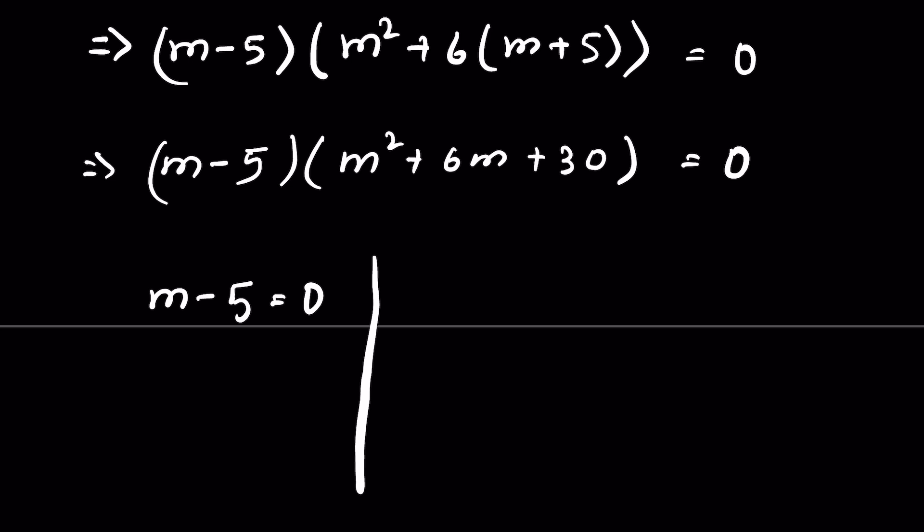When m - 5 = 0, then m = 5. This is one solution. For the second case, m² + 6m + 30 = 0, we will first check if there is a real solution.